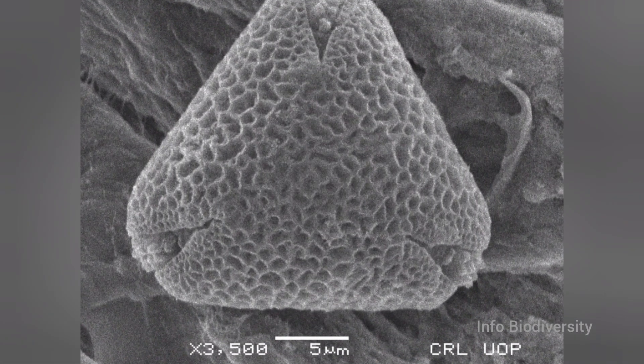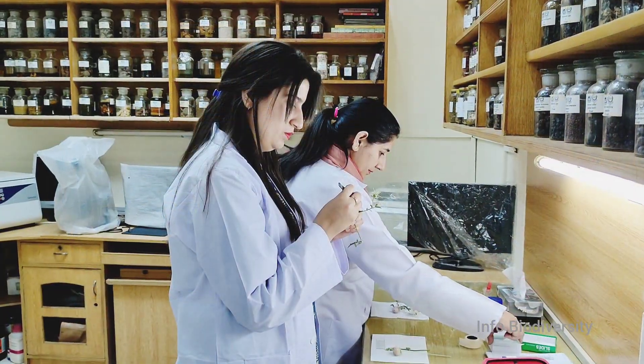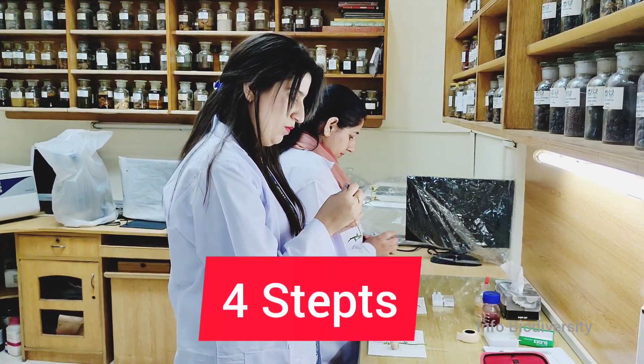Palynology is the scientific study of pollens. Pollens are the male part of the anther and anther is a male part of androecium. There are basically four steps to study the pollen.